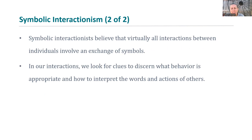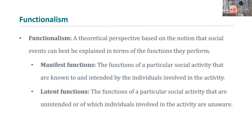Symbolic interactionists believe that virtually all interactions between individuals involve an exchange of symbols — we're either using our hands, writing, using art, or some form of expression to interact with other people. Through those interactions, we look for cues to discern markers: through body language we express whether we're confident, nervous, whether we like somebody, whether we're mad or happy. Going back to functionalism — everything is a whole and all its different parts serve a particular purpose. Manifest functions are those particular to a social activity that are known and intended; latent functions are the unintended consequences of those other functionalities.